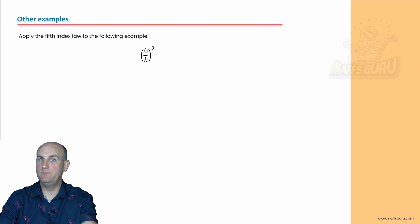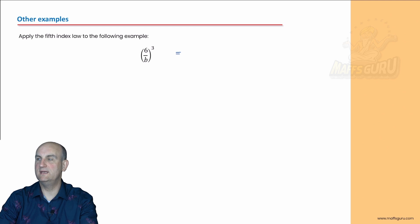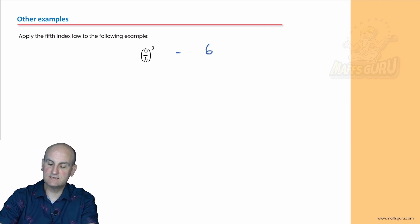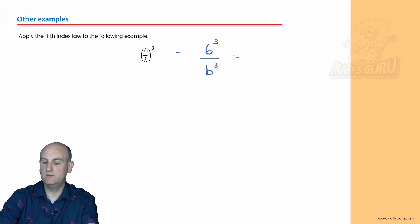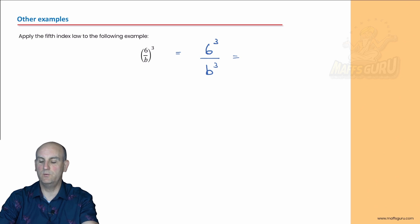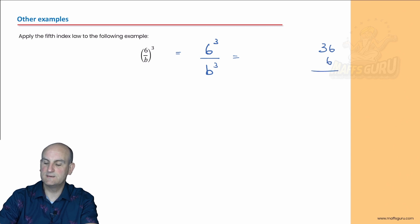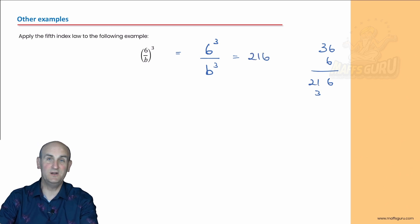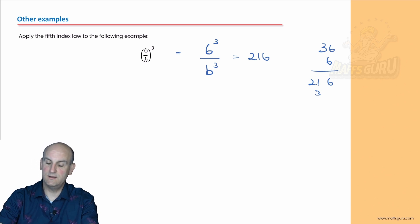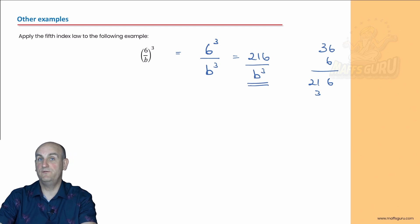Another simple example before we get more complicated. We've got (6/b) all raised to the power of 3. I'm going to take the 6 and raise it to the power of 3, and take the b and raise it to the power of 3. I wouldn't leave it as 6 to the power of 3 — I have to work that out: 6 times 6 is 36, times 6 is 216. There's nothing wrong with using pencil and paper for that. So that becomes 216 over b cubed. There is my expansion using the fifth rule.